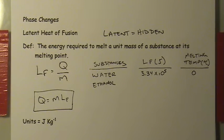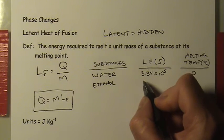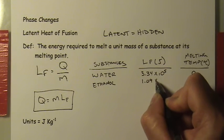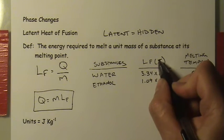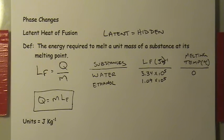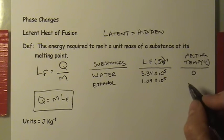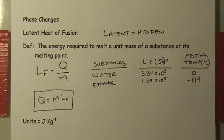Another substance is ethanol, a form of alcohol and biofuel often blended into gasoline at up to 10%. Ethanol has a smaller latent heat of fusion — only 1.09 × 10^5, or about 109,000 joules per kilogram. Its melting temperature is much lower, at negative 114°C.